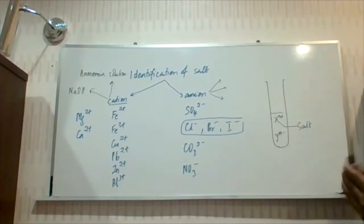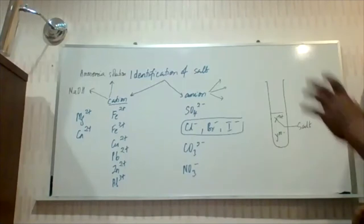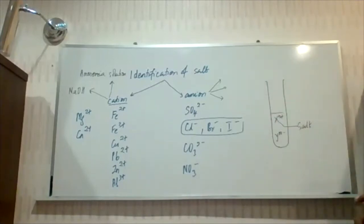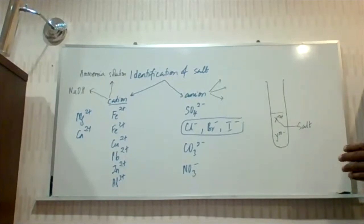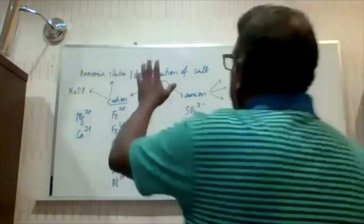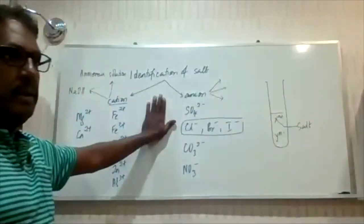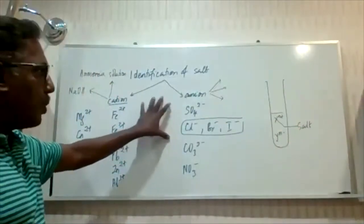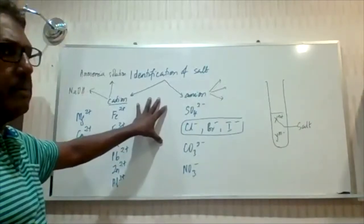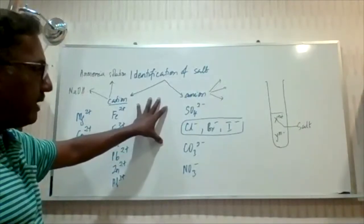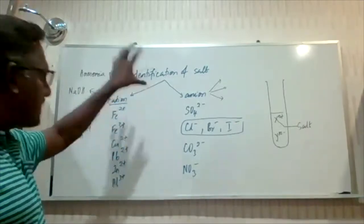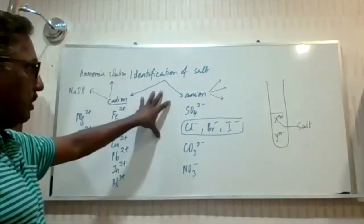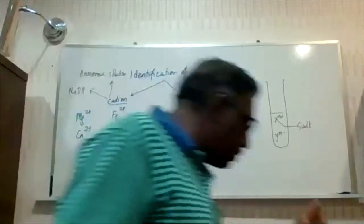You collect the results, fuse them together, and identify your salt. Now, that is the aspect of identification, but there is other information that can be derived before we do this identification. Salts have many other properties and we can make use of those properties to identify the salt, besides the standard cation/anion identification. So we go to that first.